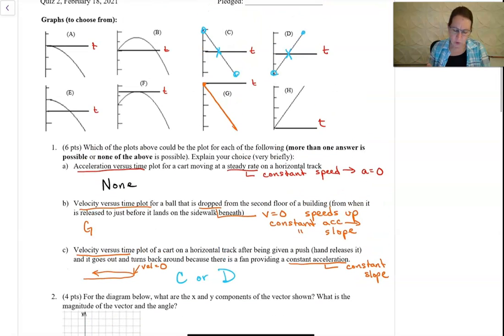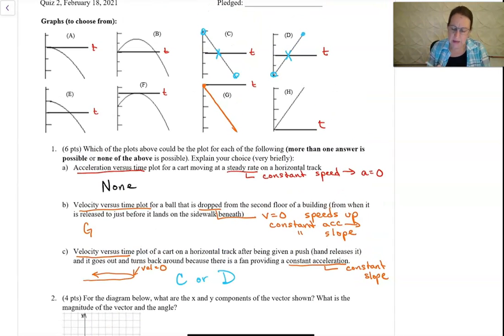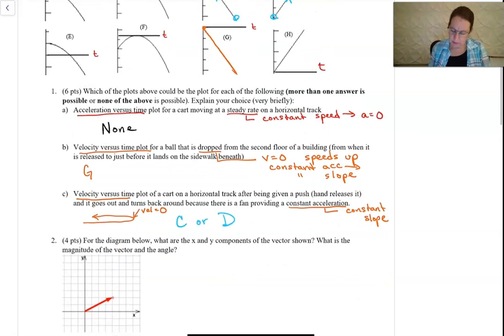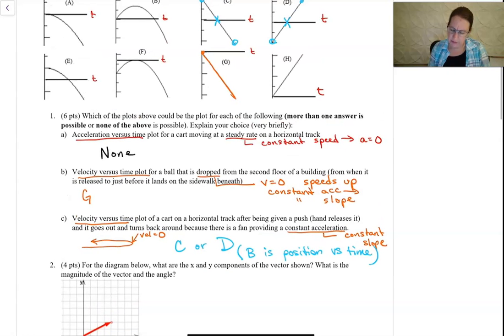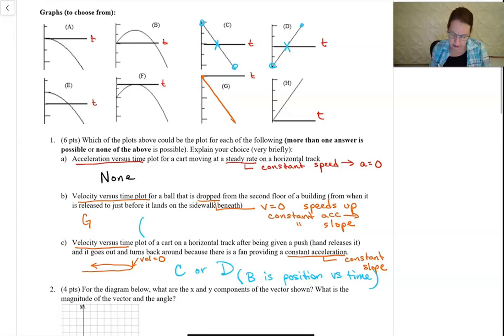Some people wanted to answer, for example, B as the question. And B would be the position versus time. So if you wanted position versus time, B is your position versus time. And similarly, for this one, for velocity versus time, notice that A would be your position versus time if you wanted that one.